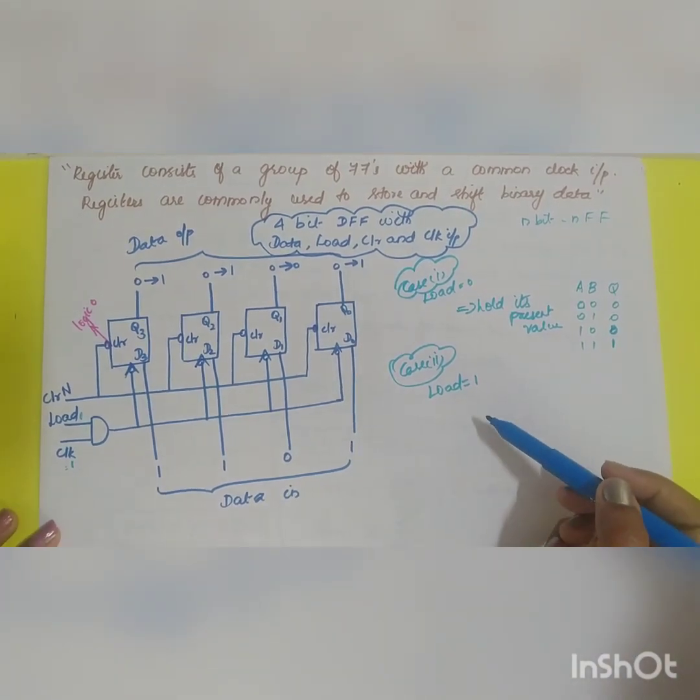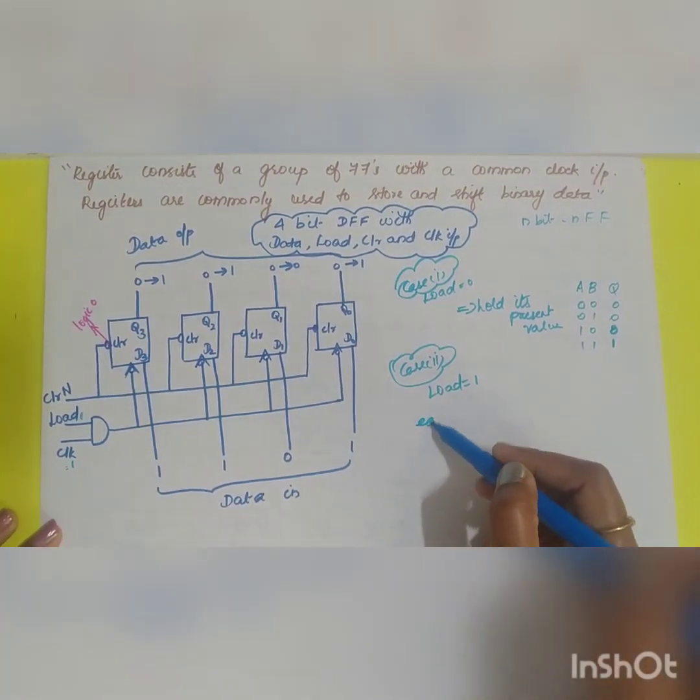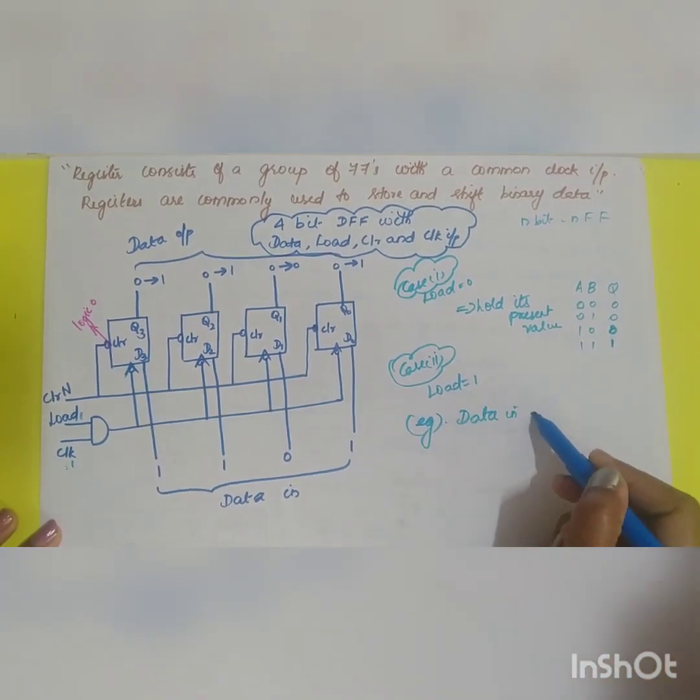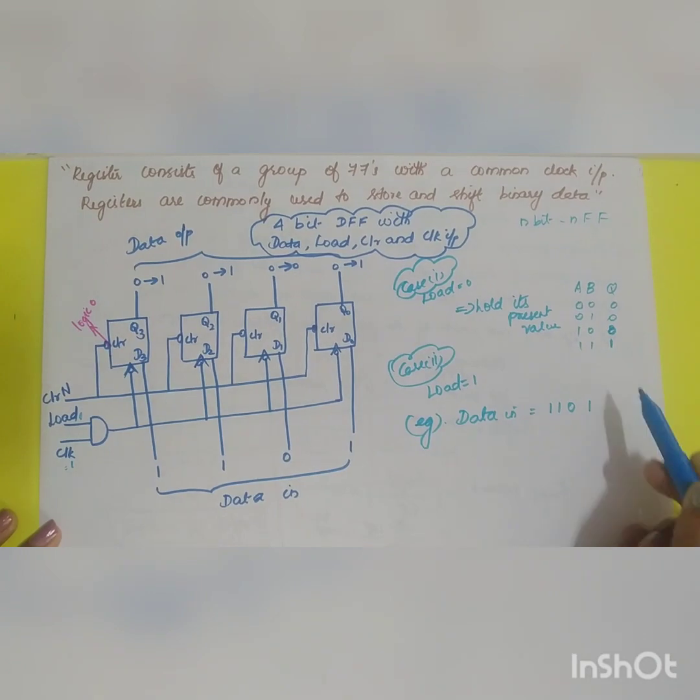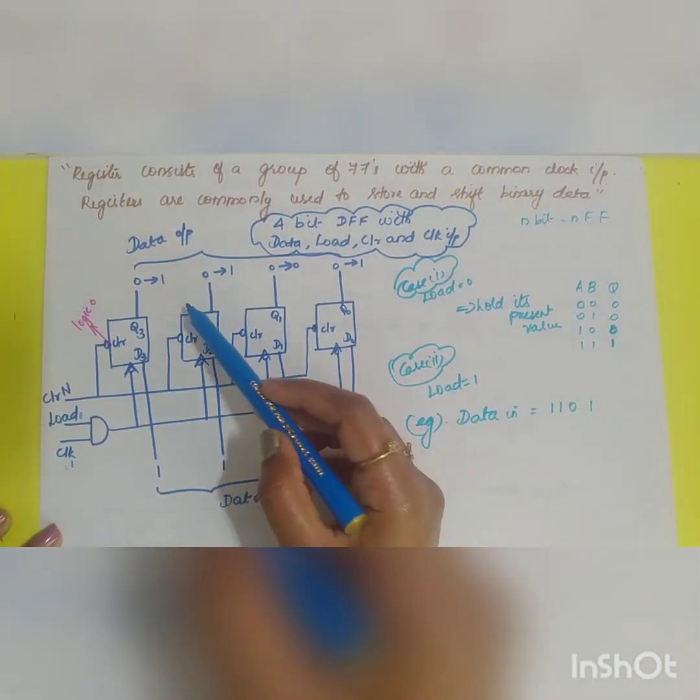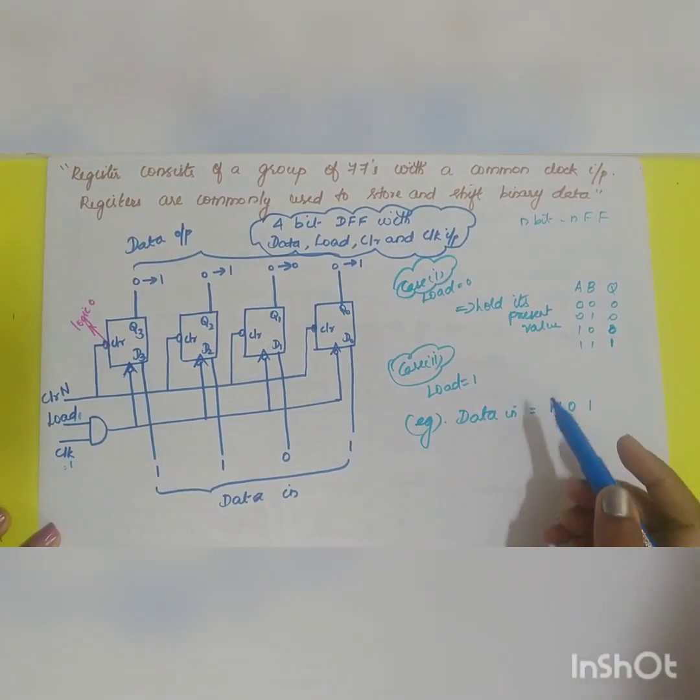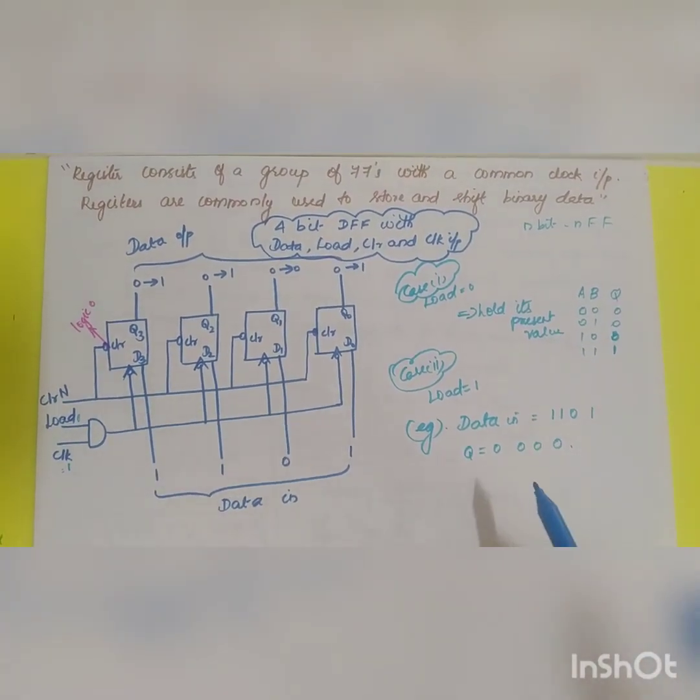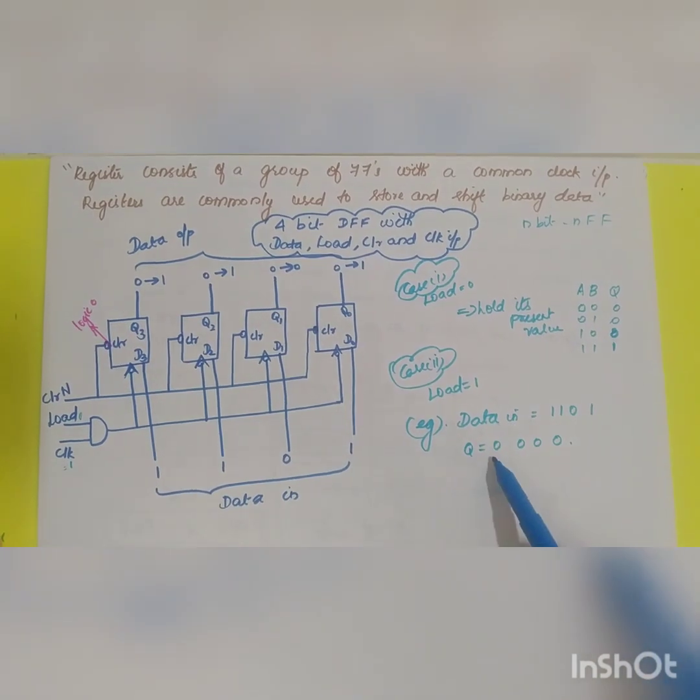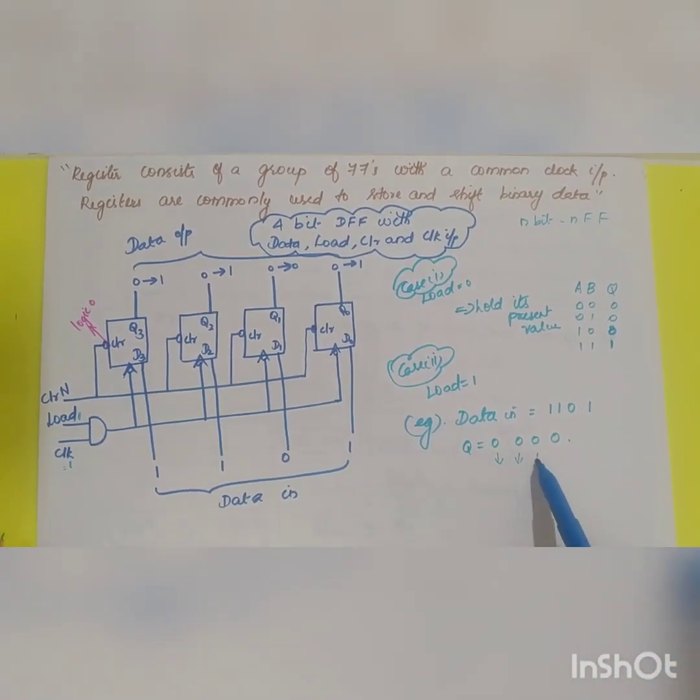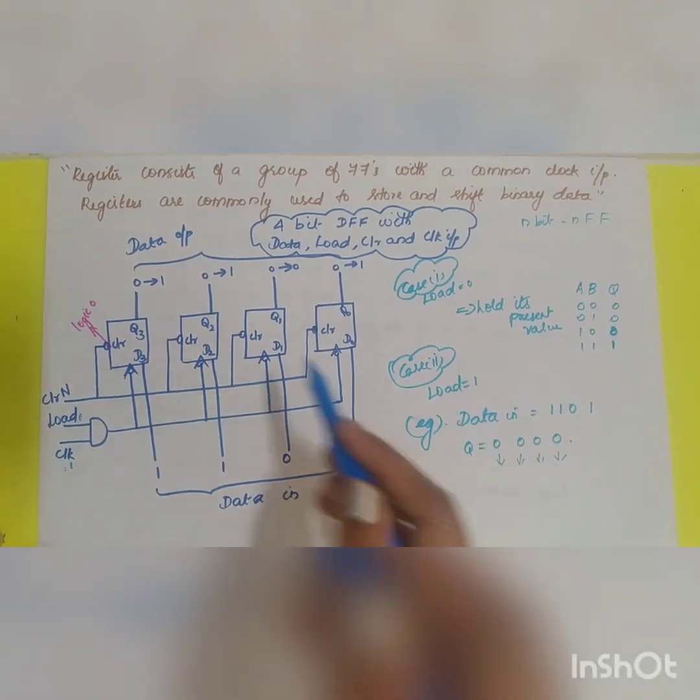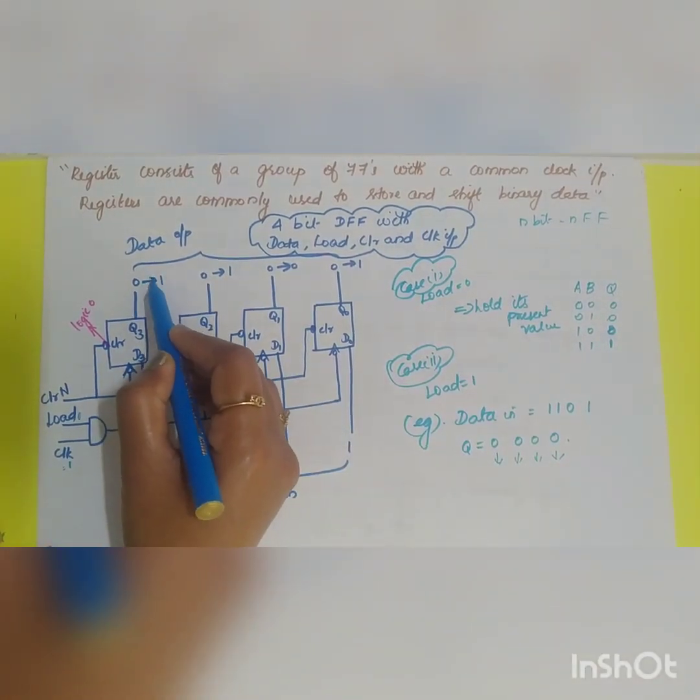For example, the data in is equal to 1 1 0 1. Previously, initially the register is cleared so that all your output values are equal to 0. Now when the load is equal to 1 the output data will be shifting from 0 0 0 0. This arrow mark indicates shifting.